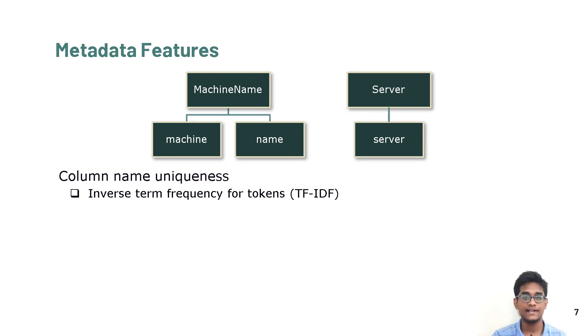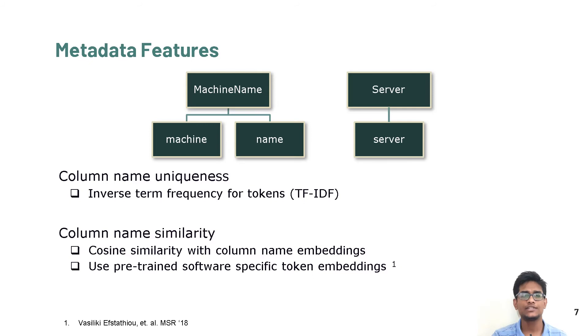Column similarity captures the semantic similarity between two columns. We use token embeddings pre-trained on software specific data sets, and generate the column name embeddings by aggregating token embeddings with their weighted TF-IDF scores. Column name similarity is the cosine similarity between two column name embeddings. Machine name and server will have a high cosine similarity, as the tokens machine and server are closed in the n-dimensional embeddings, and the token name has a low TF-IDF score.